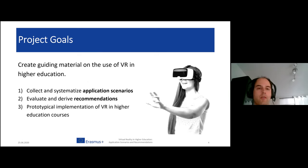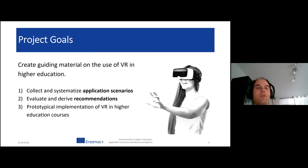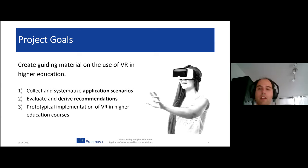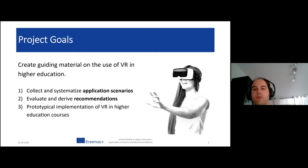In our project, we recognized that there is a lot of virtual reality technology being tried out, but most of it has an experimental character — neither systematic nor accompanied by good materials to guide newcomers who want to transform their courses to a virtual format. Our goal is to create guidelines for the use of virtual reality in higher education. We have three sub-goals: to collect and systematize application scenarios, to evaluate and derive recommendations, and to develop prototypical implementations of virtual reality in higher education courses.